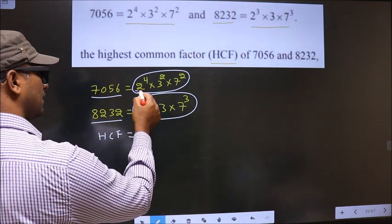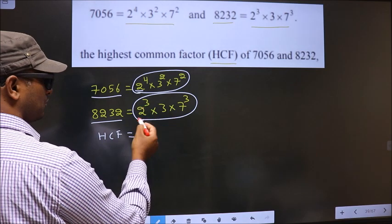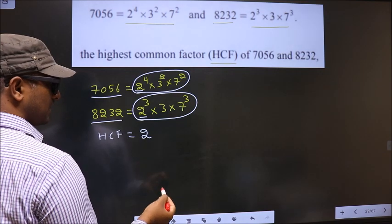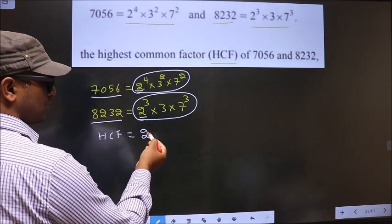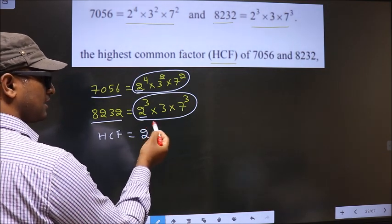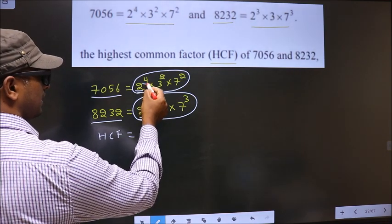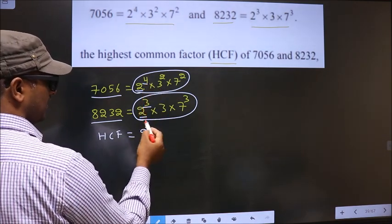Starting with the number 2. Do we have 2 here? Yes. So here also you write 2. Now the question arises, what power will this 2 take? It will take the smaller of both powers. Smaller of 3 and 4 is 3, so here it will get 3.